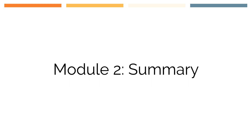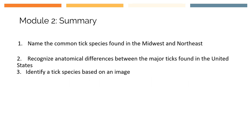In summary for module 2, you have learned how to name the common tick species found in the Midwest and the Northeast, recognize anatomical differences between the major ticks found in the United States, and identify species based on an image.